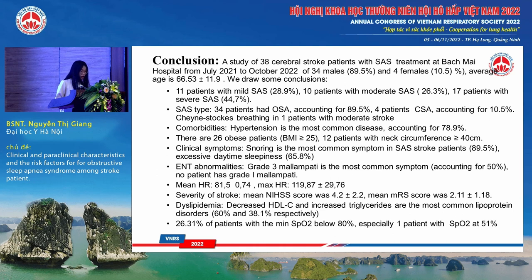Snoring is the most common symptom in sleep apnea syndrome in stroke patients, and Mallampati grade 3 is the most common oropharyngeal finding. Decreased HDL-C and increased triglycerides are the most common lipoprotein disorder in our patients. Notably, one patient had an SpO2 as low as 51%.